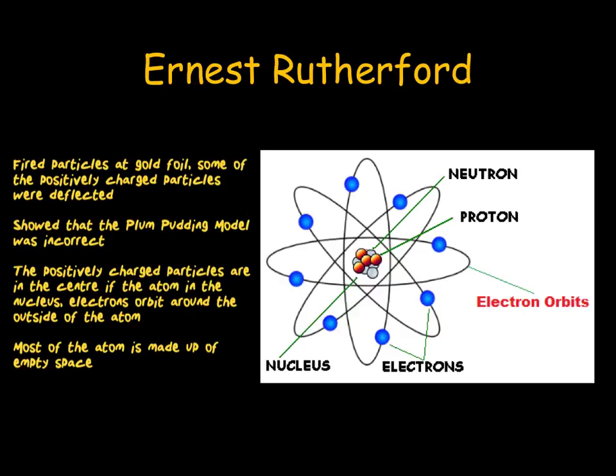Rutherford came up with a new theory. He suggested that the positively charged particles occupied a space in the middle of the atom, known as the nucleus. He also suggested that electrons orbited around the outside. This meant that most of the atom is actually made up of empty space.